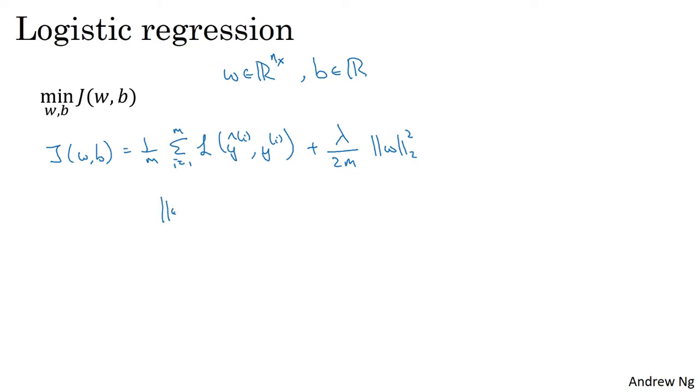The norm of W squared equals the sum from j=1 to Nx of Wj squared, or W transpose W, which is the square Euclidean norm of the parameter vector W. This is called L2 regularization because you're using the Euclidean norm, also called the L2 norm of the parameter vector W. Now, why do you regularize just the parameter W?